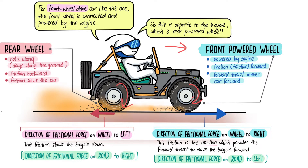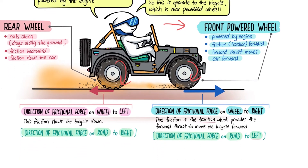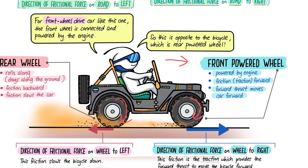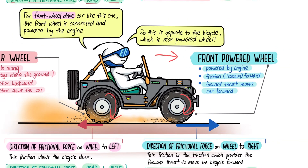To give you a better idea, imagine you're crawling on the floor using only your arms — not your legs. Your arms grip the floor and pull your whole body forward. Similarly, the front wheel of a front-wheel-drive car grips the floor just like that forward arm. Therefore, the direction of friction on the front wheel is to the right, and this is the thrust force — the forward force of the engine.